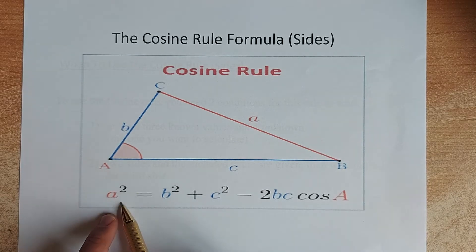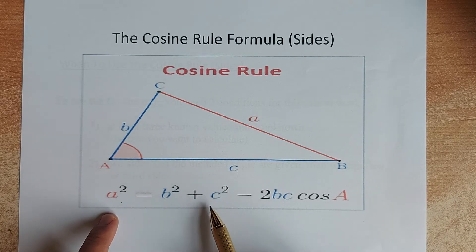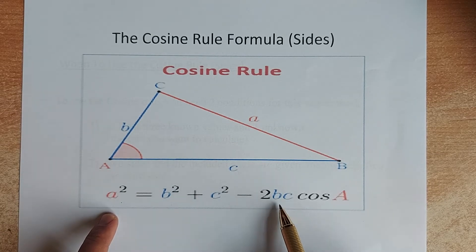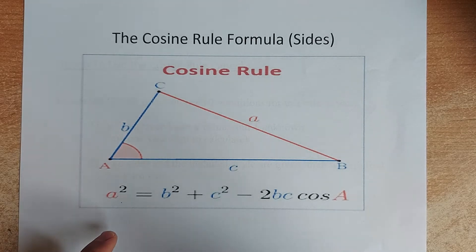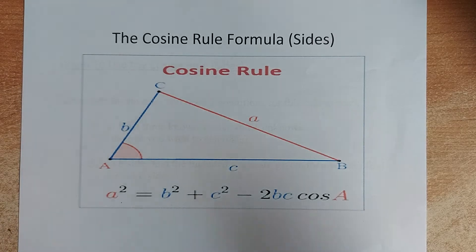So the formula is again a squared equal to b squared plus c squared minus 2bc cosine A. And don't forget, you are interested in a. Once you've got the answer for a squared, you need to square root.